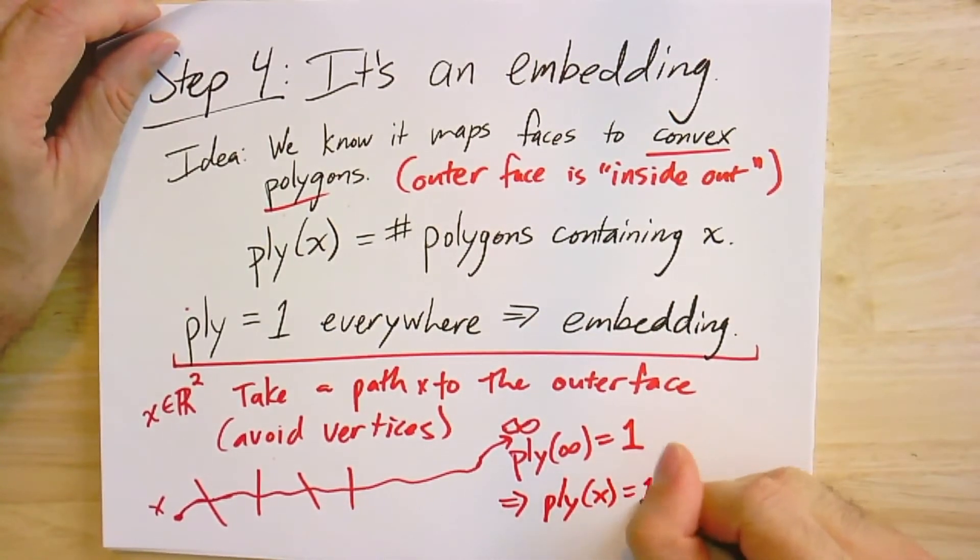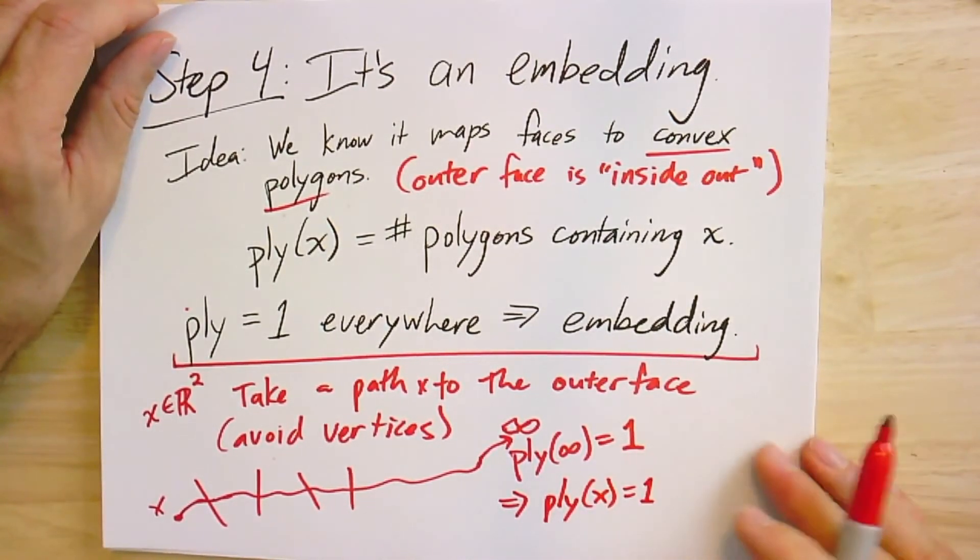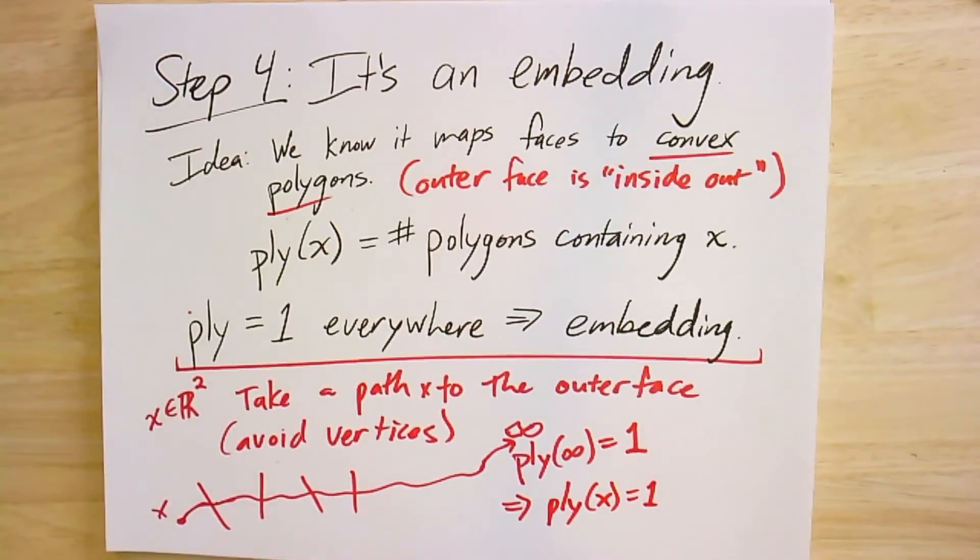This implies the ply at x was 1. We didn't make assumptions about where x was. The ply is 1 everywhere. That is how you show this is an embedding.